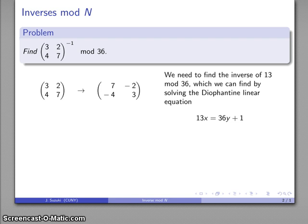So we'll solve our diophantine linear equation. 13 times what gives you some multiple of 36 plus 1. And we get a solution x equals 25, y equals, well, we don't really care what y is. That doesn't really matter. So the inverse of 13, our determinant, is 25.